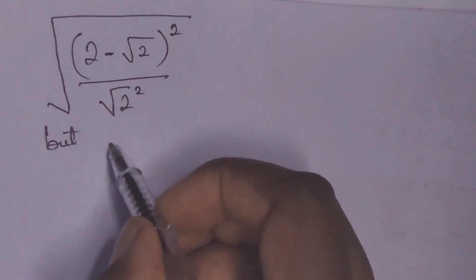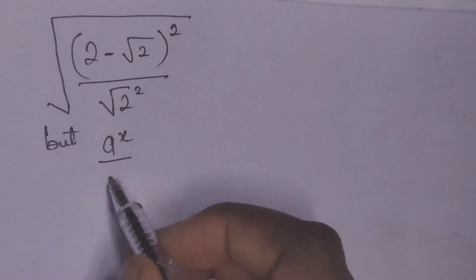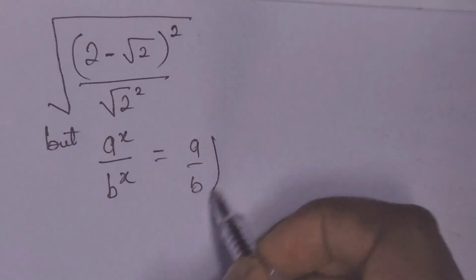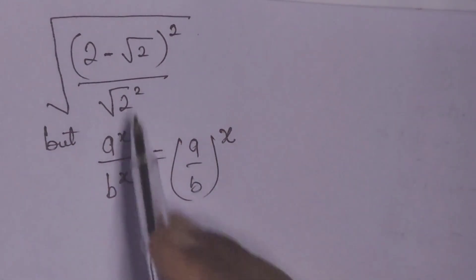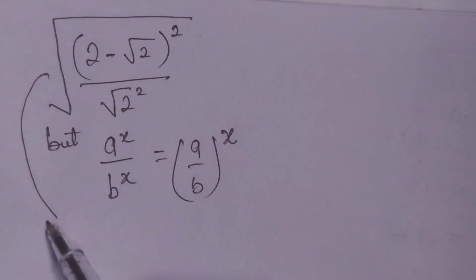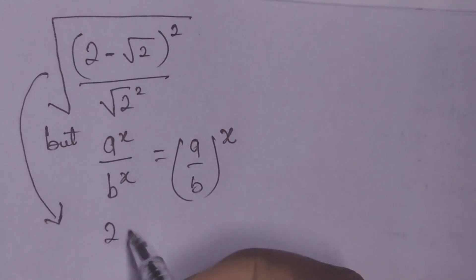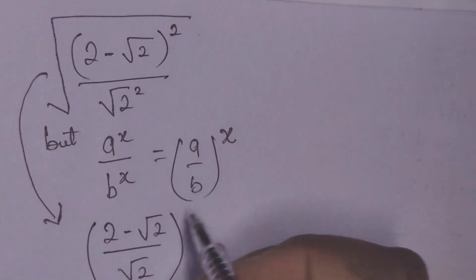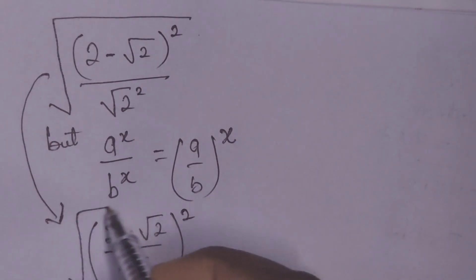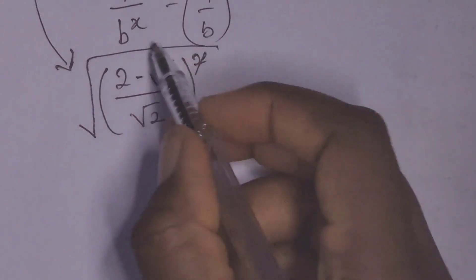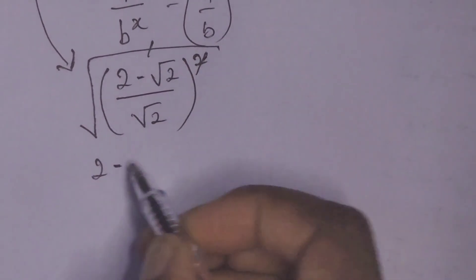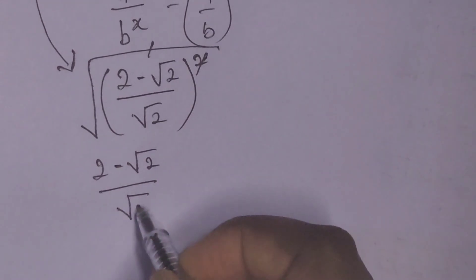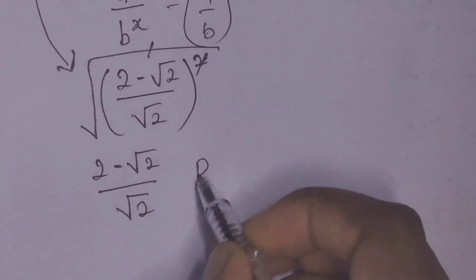Recall that when we have a to the power of x over b to the power of x, this is the same as a over b raised to the power of x. So this becomes 2 minus root 2 over root 2, raised to the power of 2. Taking the square root, the squaring and the square root cancel, leaving us with 2 minus root 2 over root 2. We will now rationalize this.